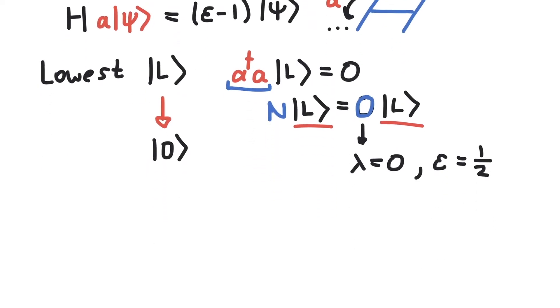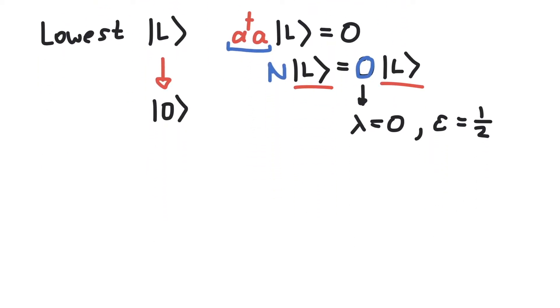But what about a highest state? Let's do the same calculations, but now we say that there is a highest state. Let's call it capital H. And our highest state is defined that we cannot raise it any further. So if we apply a dagger on our highest state, this has to vanish.